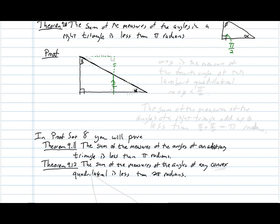And since this is the midpoint here, this length is equal to this length, and we are going to do this by constructing a right angle. Okay, so we now have a Lambert quadrilateral.